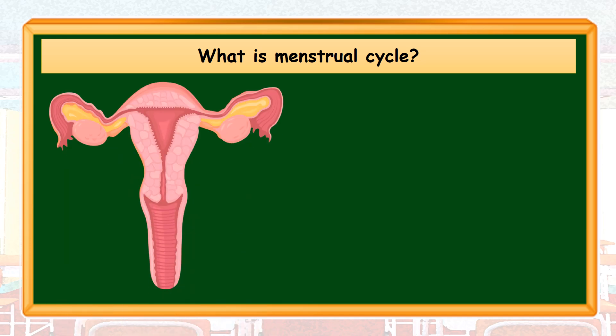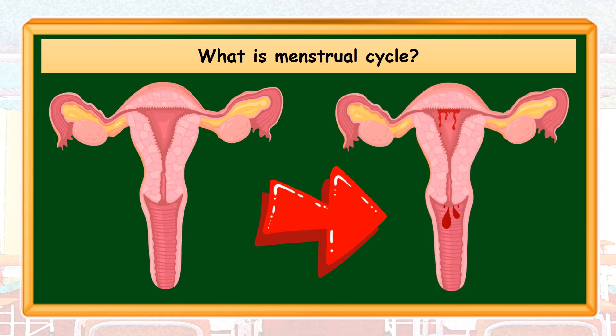Every month, the female reproductive system prepares for pregnancy. The ovary releases a single egg cell every month. But if this egg cell does not undergo fertilization, the egg will be absorbed by the uterus. And together with the thickened endometrium lining, it will shed and turn into menstrual period.